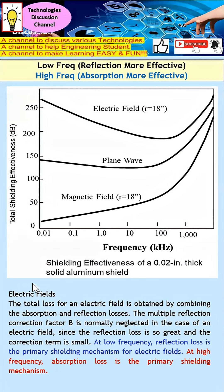Let's take a closer look at the electric field case. The total loss for an electric field source is obtained by a combination of absorption and also reflection. The multiple reflection term B is normally neglected, because the shielding effectiveness for electric field is already so high that we can ignore the B term. At low frequency, reflection loss is the primary shielding mechanism for electric field, and you can see that reflection actually reduces with frequency.